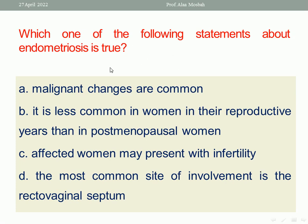Malignant changes are common — this is wrong. It is less common in reproductive years than postmenopausal women — this is wrong because it is more common in reproductive age. Affected women may present with infertility — this is true, this is the right answer. The most common site of involvement being rectovaginal is not true. So the right answer is: affected women may present with infertility.